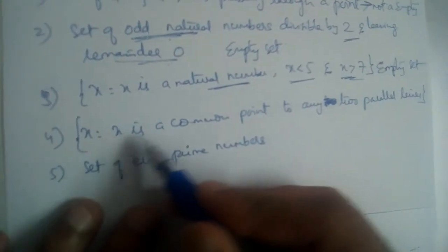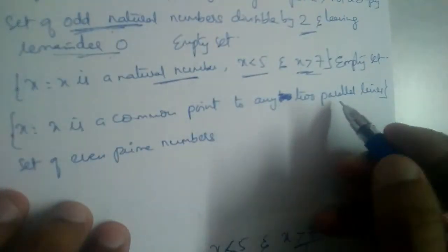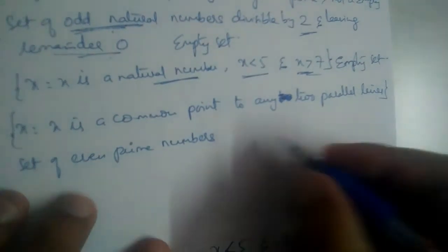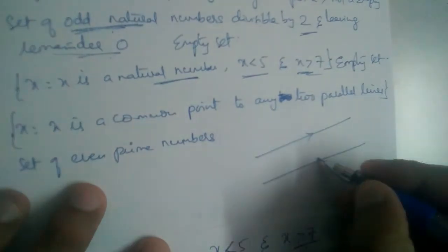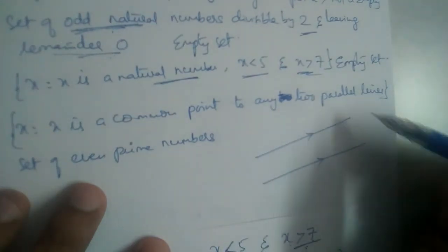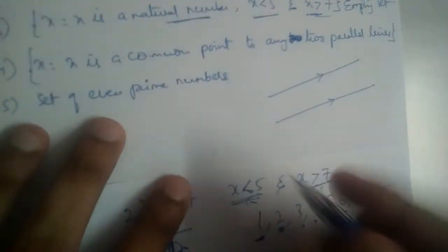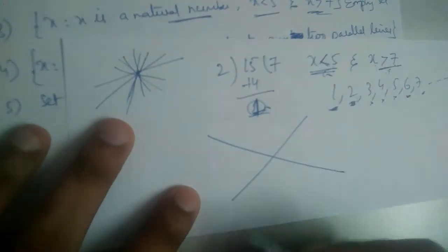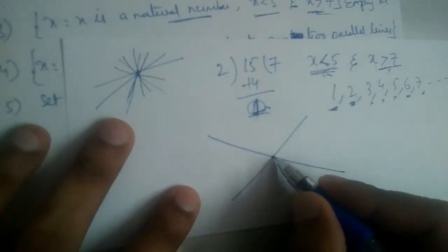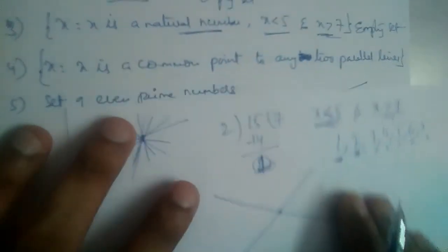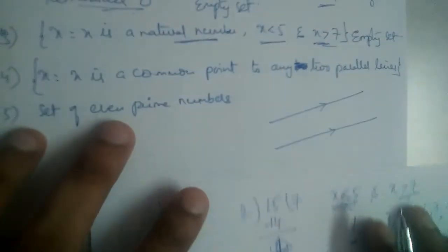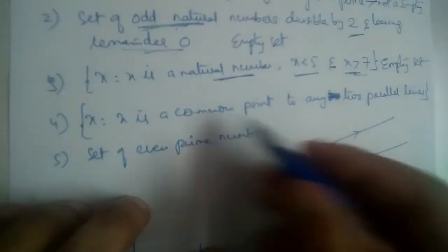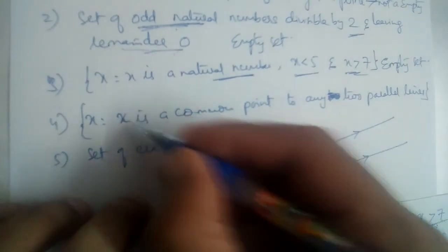Fourth one: x is a common point to any 2 parallel lines. Common point means the point where the 2 lines intersect. Now, can we have a common point to 2 parallel lines? No, because parallel lines will never intersect each other. So is this an empty set? Yes, it is an empty set.